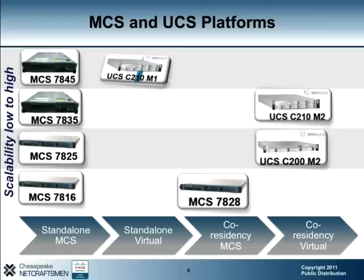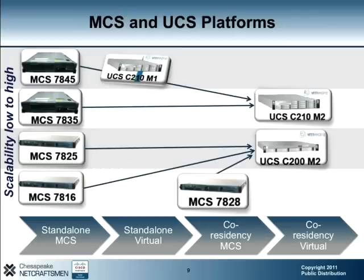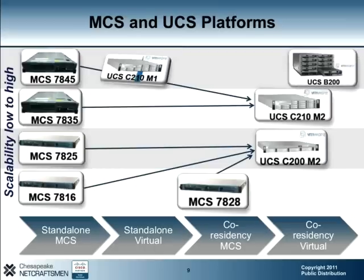The UCS C-Series is a rack-mounted chassis solution with all compute services built in. From the UC perspective, we are going to focus on the UCS C210M1, M2, and the UCS C200M2. The UCS C210M1 is an odd offering since it is a standalone virtual machine. The C210 and C200M2 platforms both support UC application co-residency on a single platform. We can loosely map migration paths for the MCS platforms to these individual UCS platforms, though technically the UCS platforms are generally more powerful than their MCS cousins. Next we have the UCS B-Series platform, which is a modular chassis solution supporting up to eight individual UCS blade servers.